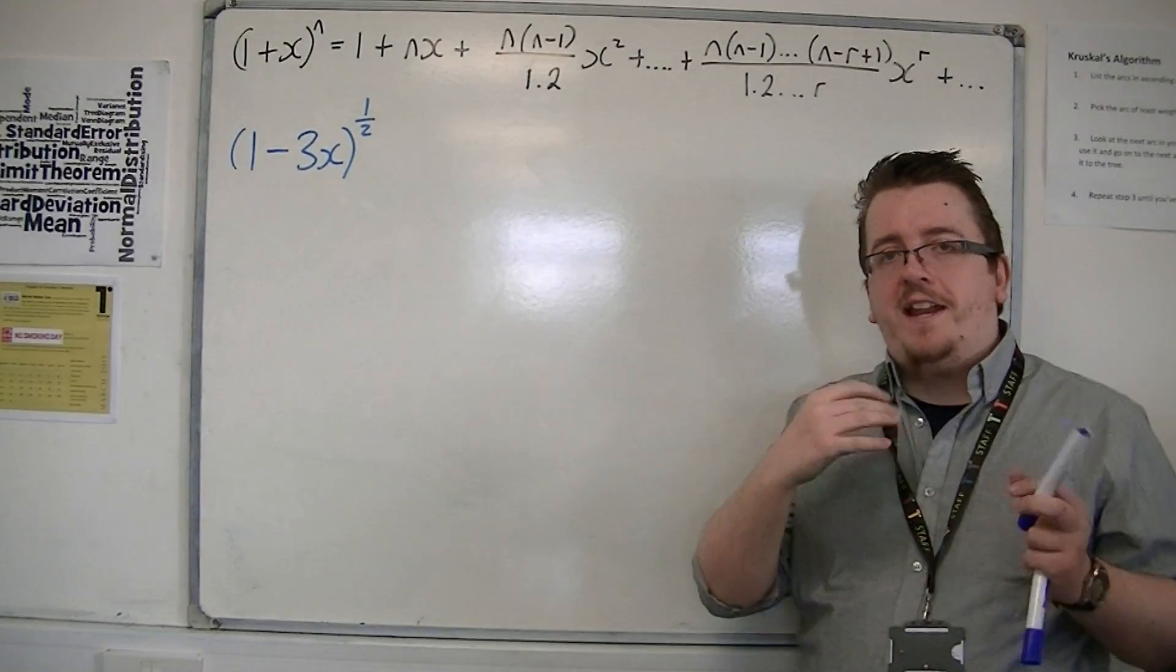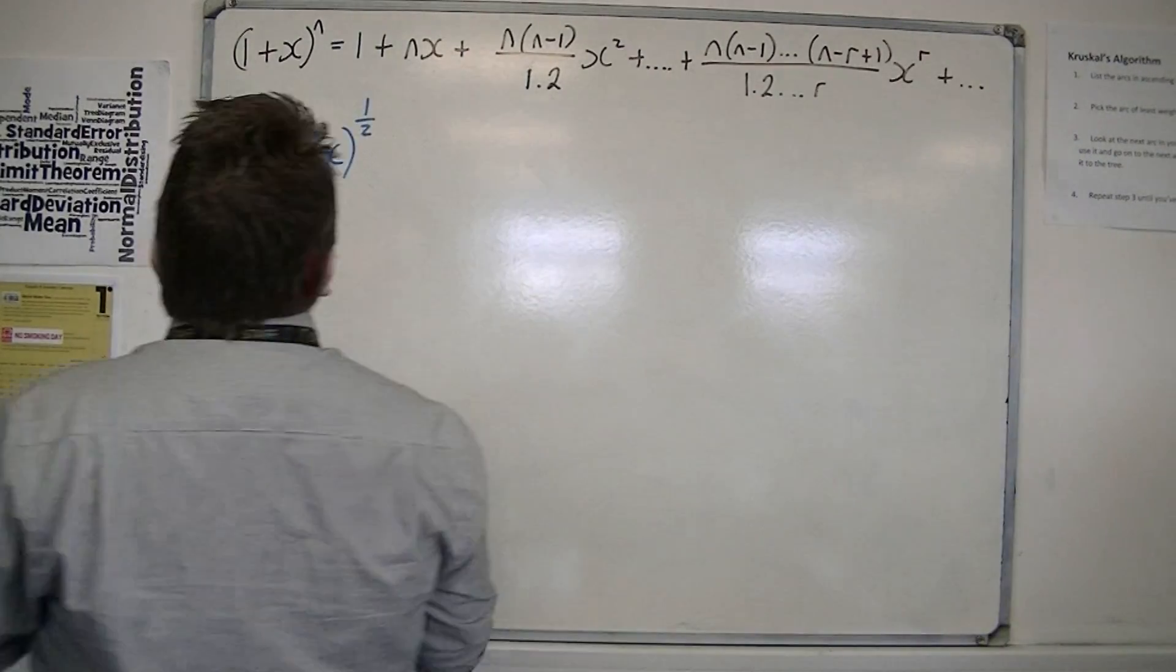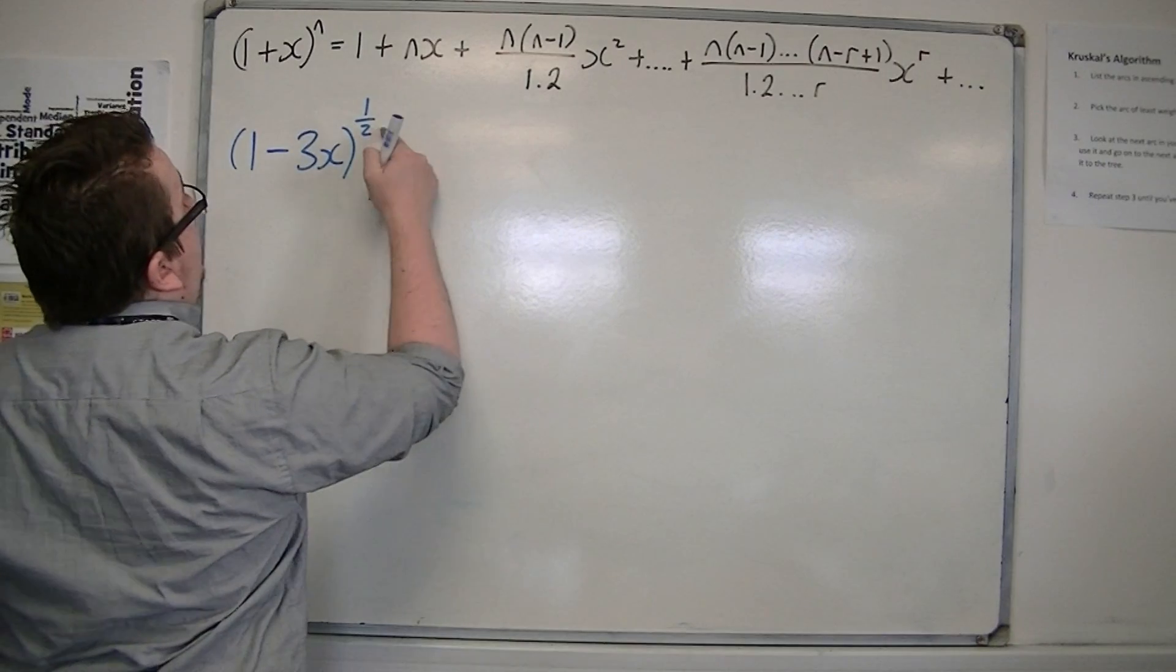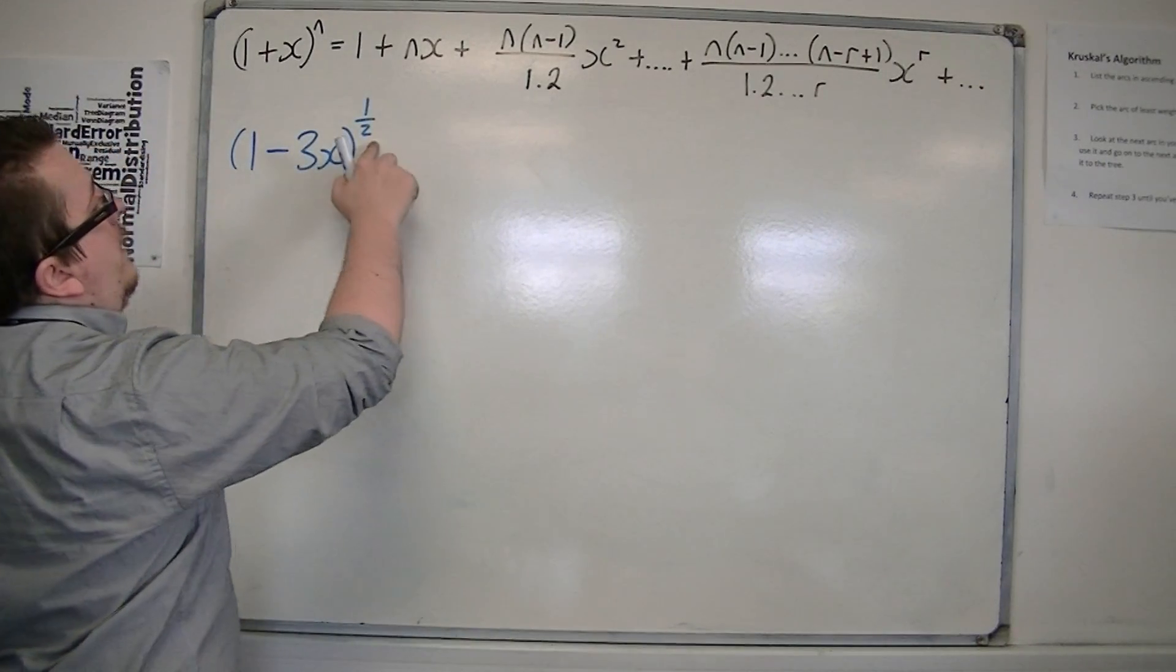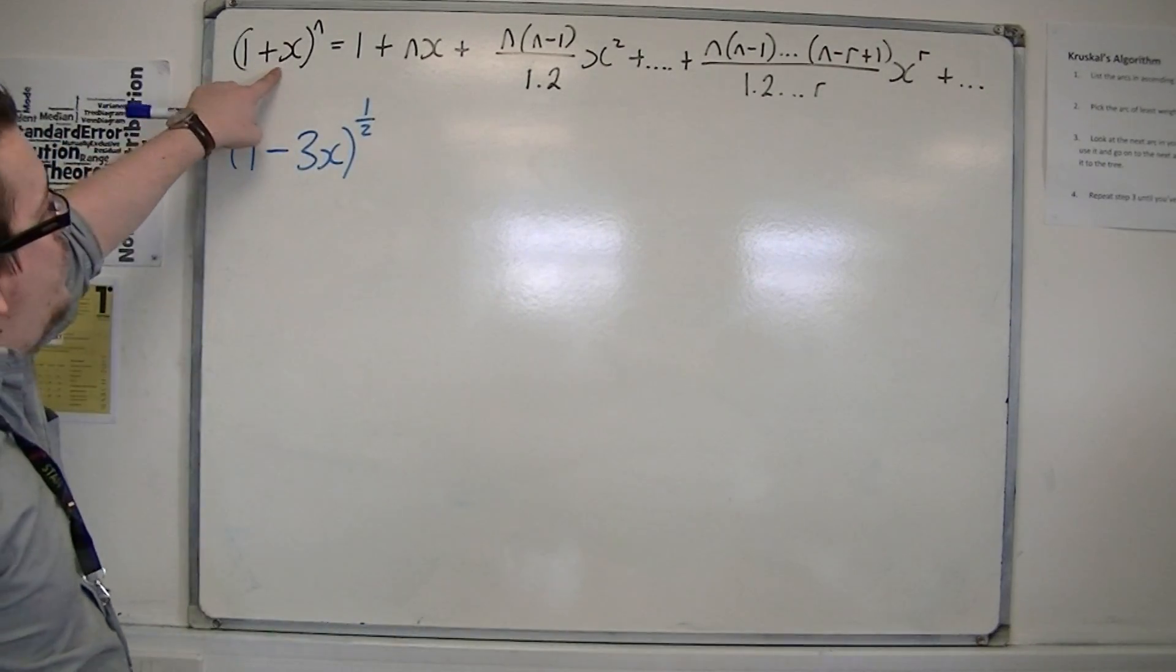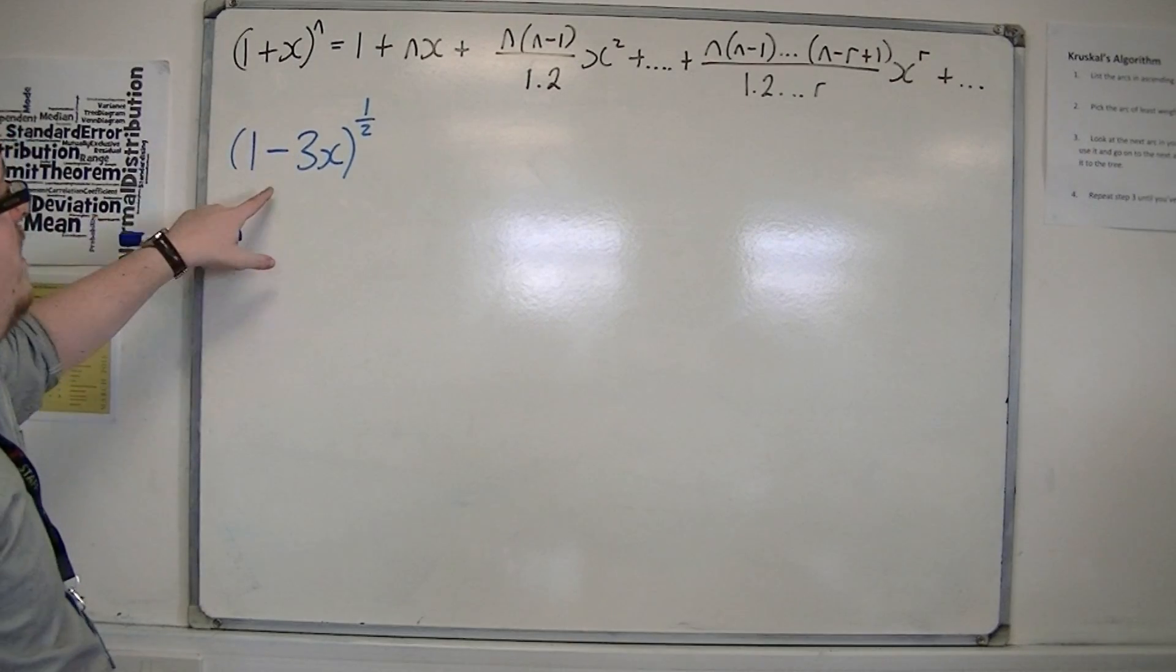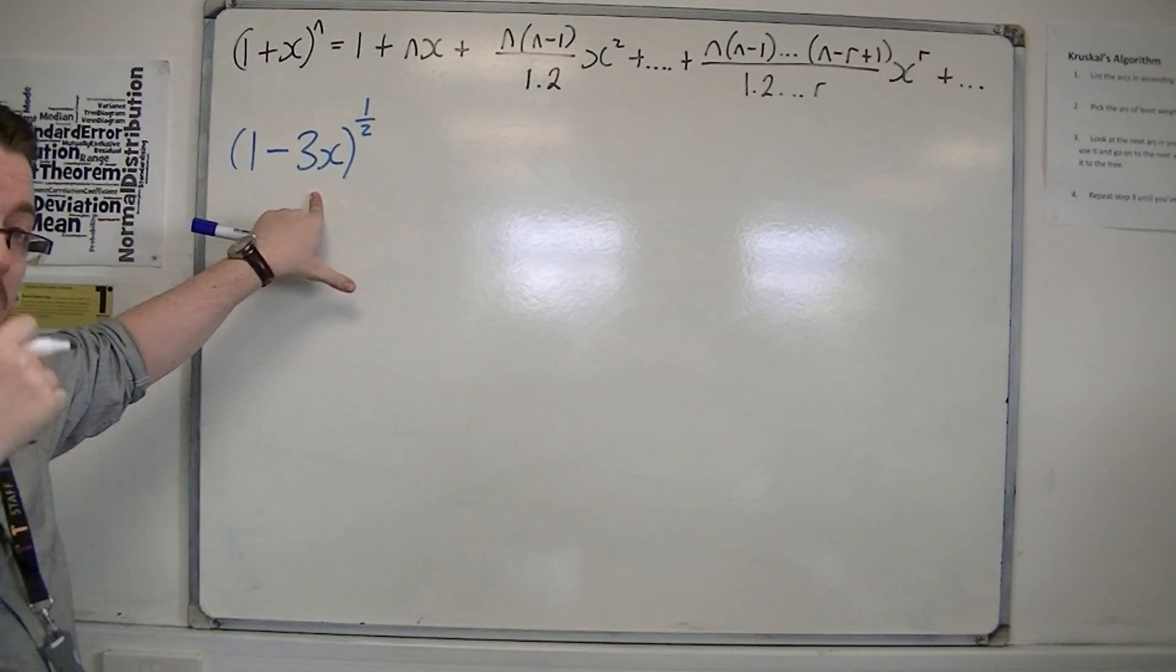Calculators at the ready because it gets a little messy. So n is 1/2, and we don't quite have 1 + x here, we have 1 - 3x. I'll show you how that works.